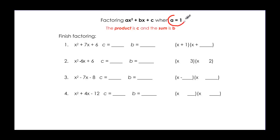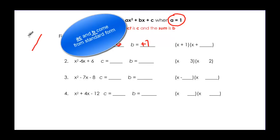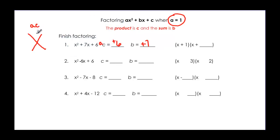We're going to make sure that a is always 1 in this video, so things work out nicely. For the first example, a times c is 1 times 6 equals 6, and b is positive 7. In the X, ac = 6 goes on top and b = 7 goes on the bottom. I need factors of 6 that add to 7 — that's 6 and 1, both positive. So the factors are (x+1)(x+6).